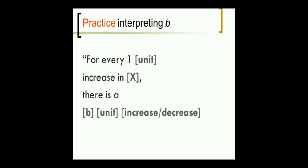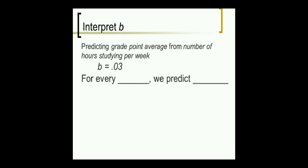This is kind of a template for how to construct a statement interpreting b. For every one, and then put in the name of the units of the variable you're talking about for x. Increase in, and then put the name of the x variable. There is, put in the number for b, and then the name for the kinds of units of y. Then you do increase or decrease, depending on whether y is positive or negative. This isn't the only way you can do it, but this is a good place to start. Let's practice.